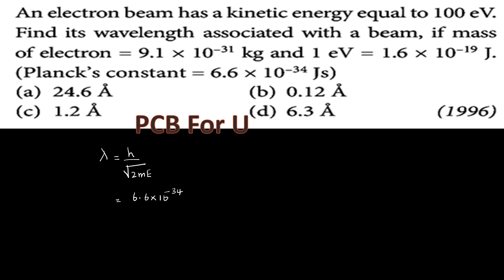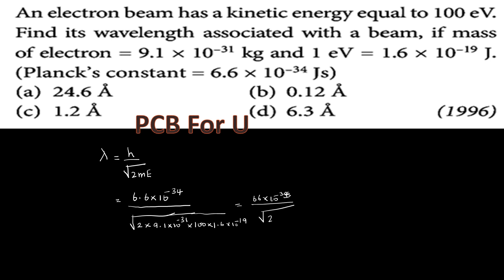Now we substitute the values: h = 6.6 × 10⁻³⁴ joules, divided by the square root of 2 into mass of electron 9.1 × 10⁻³¹ kg, into energy 100 electron volts, where 100 eV equals 100 × 1.6 × 10⁻¹⁹ joules.